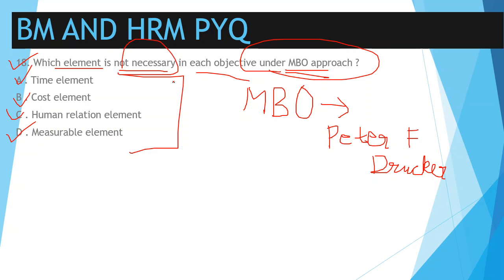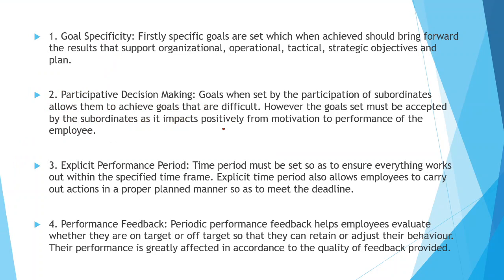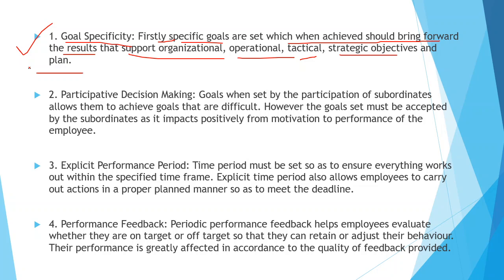The answer will be cost element, as it is not necessary under the MBO approach. Under MBO we have time element, human relation element, and measurable element. The first key element is goal specificity — specific goals are set which, when achieved, should support organizational, operational, tactical, and strategic objectives and plans.